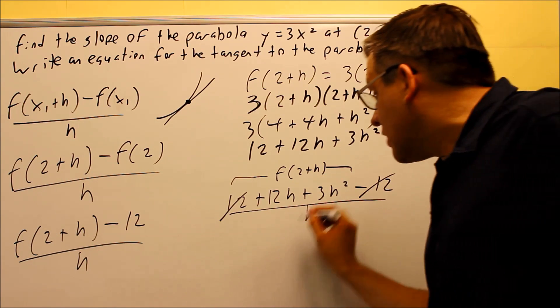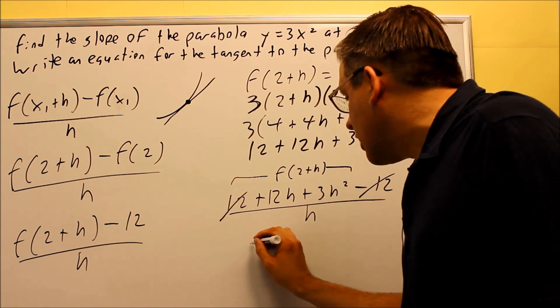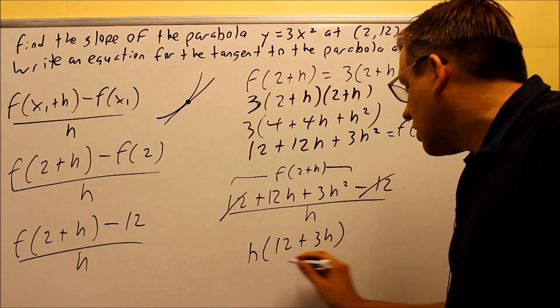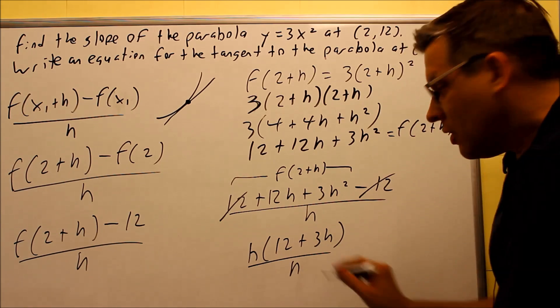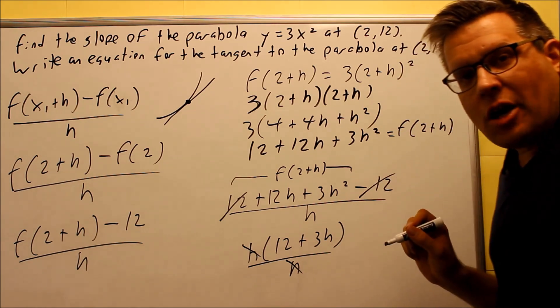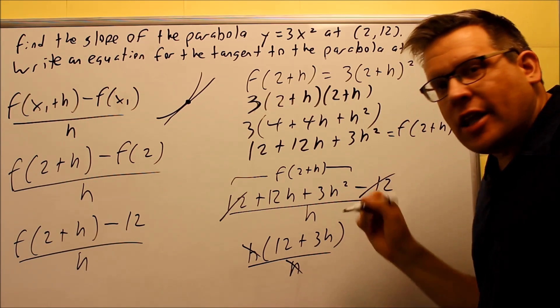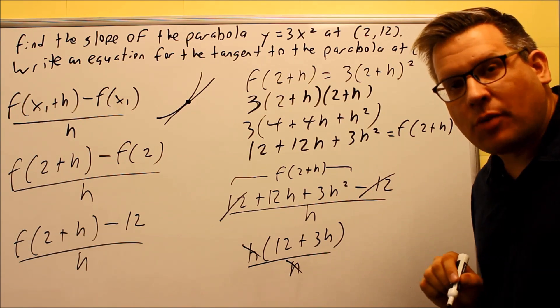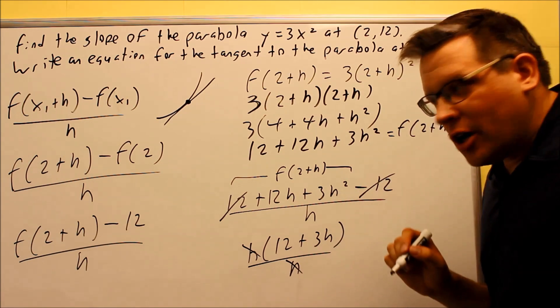I want to factor out an h from the middle ones. So if I do that, if I take out an h, I get 12 plus 3h. And then I have an h on the bottom. The two h's, we're going to cancel. So you want to do that step because we talked about that you're eventually going to put in a 0 for h. You've got to have that gone from the bottom so you're not dividing by it anymore.